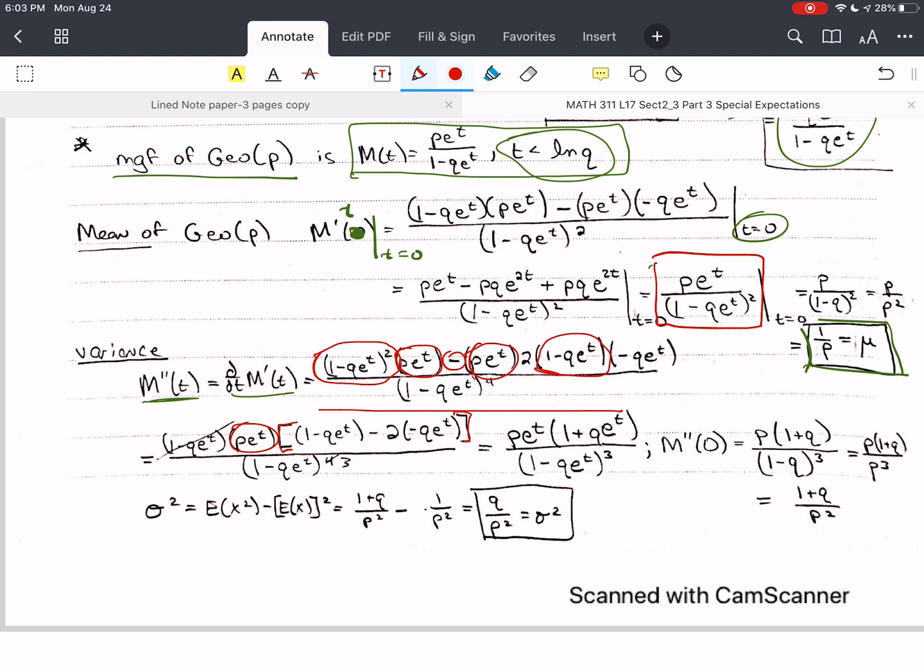you've got 1 minus q e to the t to the 4th. I have 1 up here, so I cancel that and end up with 3. So I end up with a cube. I keep on simplifying. And this is E X squared, the expected value of x squared, not the variance. I still have to subtract the mean squared. And when I do that, I get q over p squared. This is the variance of the geometric distribution.